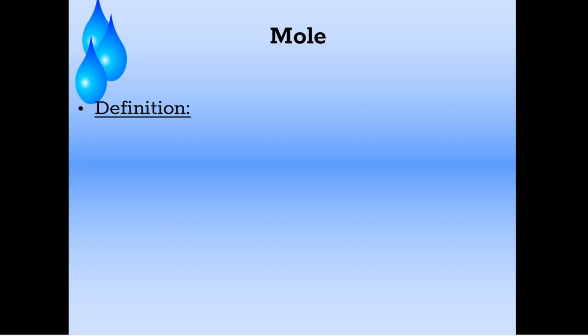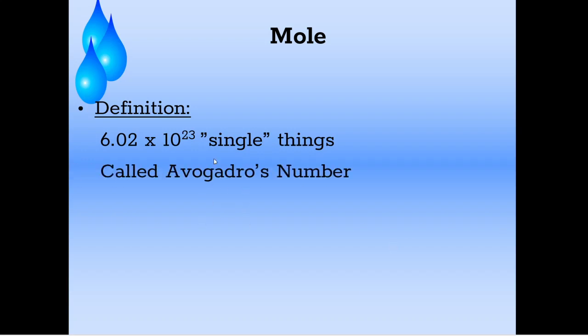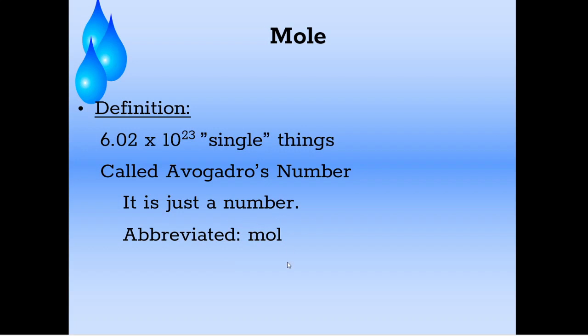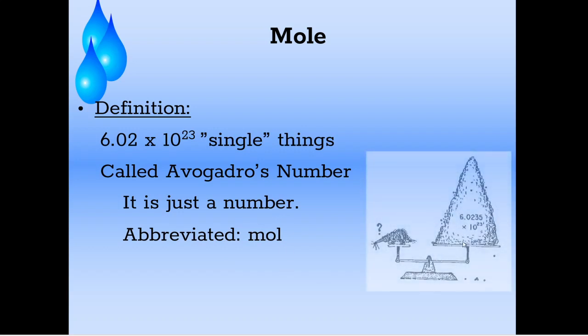So what is a mole? It's not a furry thing that lives in the ground — that's not what we're talking about in chemistry. The definition of a mole is 6.02 times 10 to the 23rd single things. So it's like 6.02 times 10 to the 23rd eggs, pencils, erasers — anything you want. Here in chemistry we call it Avogadro's number, after who created it. It is just a number, and we abbreviate it mol.